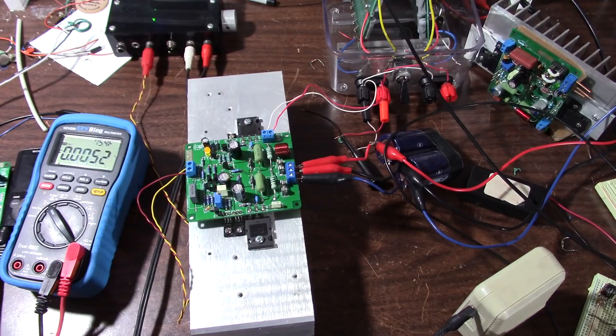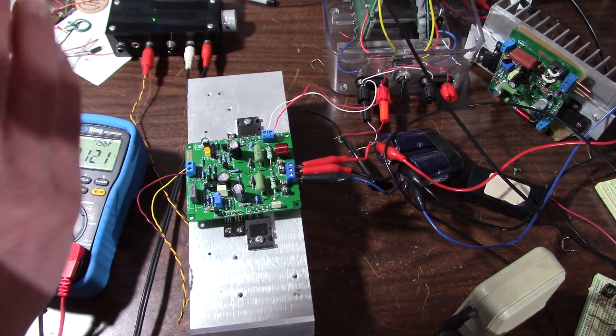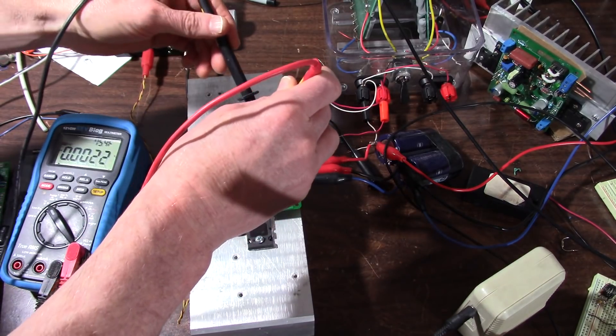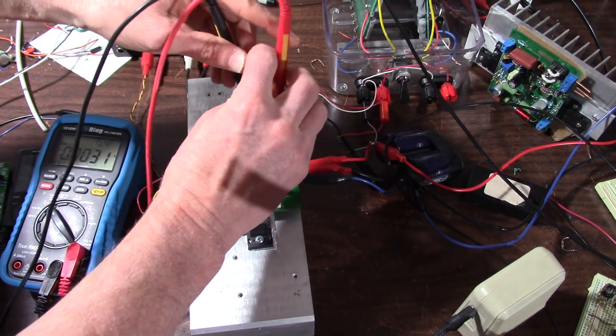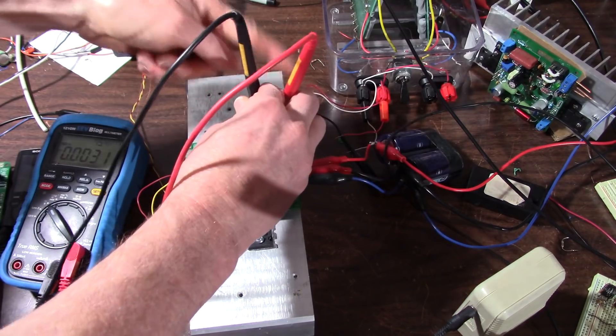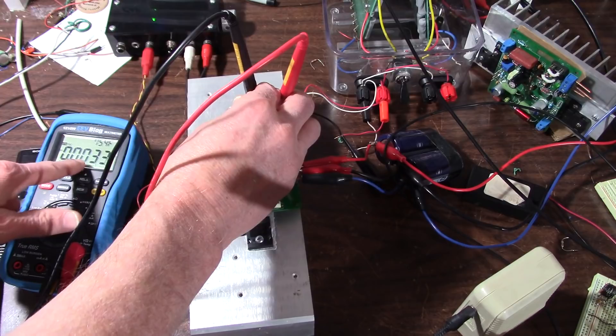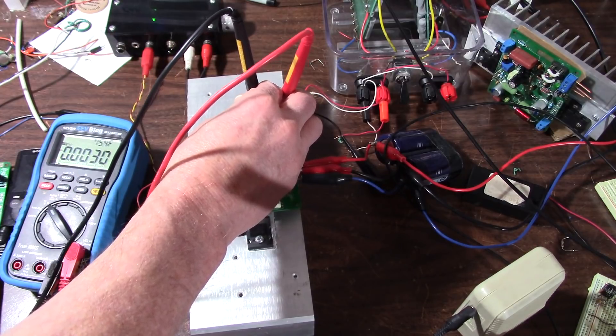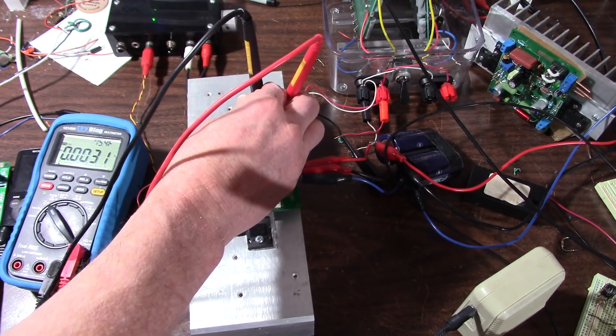Another thing I was looking at was the DC output offset. And we'll check that now. I've got the probes on the output connection, and it's around three point something millivolts. Very low, very good.